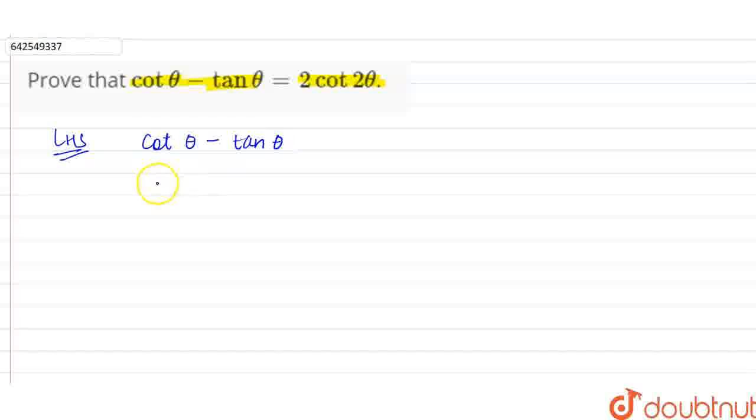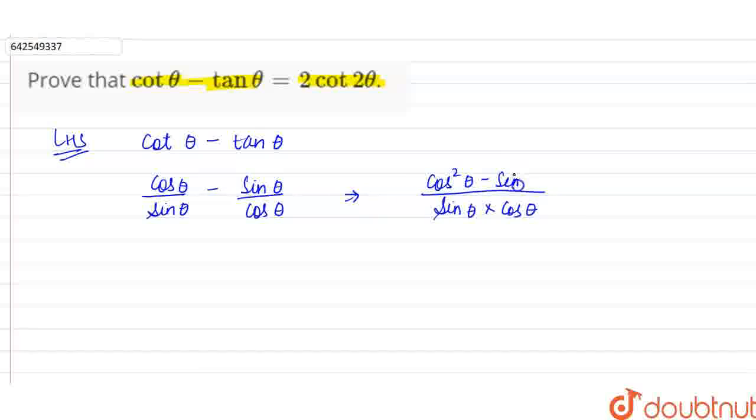So cot theta in terms of cos and sin can be written as cos theta over sin theta minus tan theta can be written as sin theta over cos theta. Now we are taking the LCM. So if we take the LCM, the LCM will be sin theta into cos theta. And in the numerator, it will be cos square theta minus sin square theta.